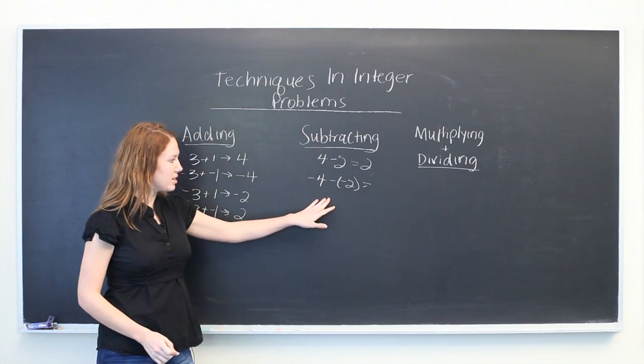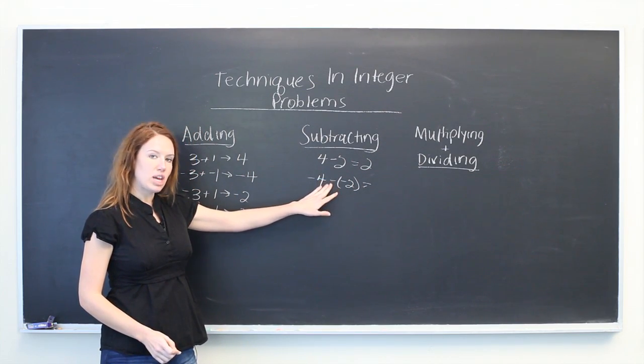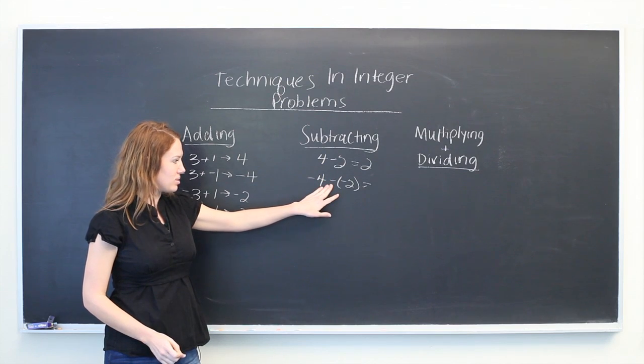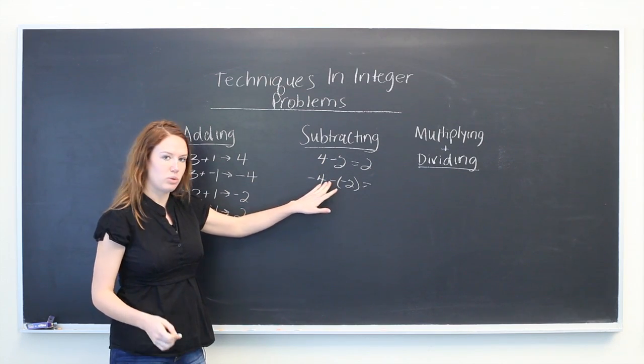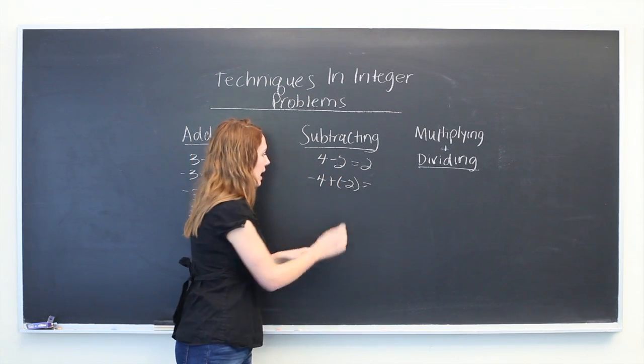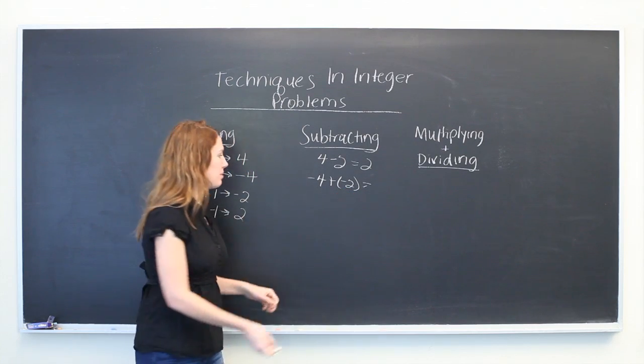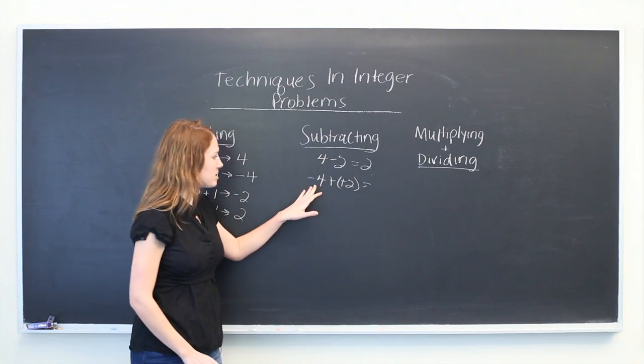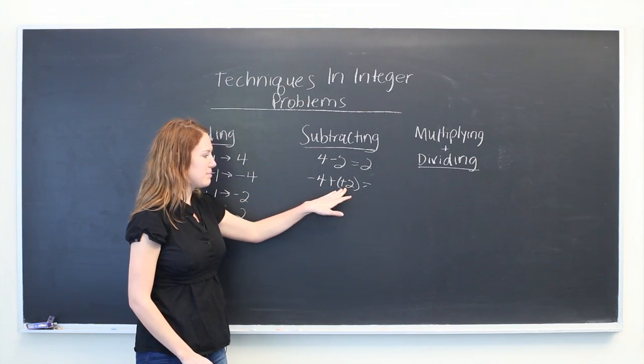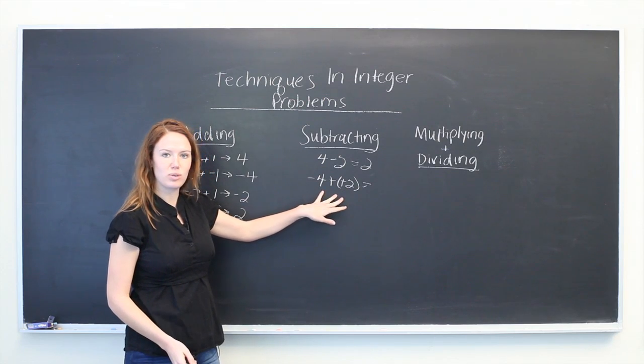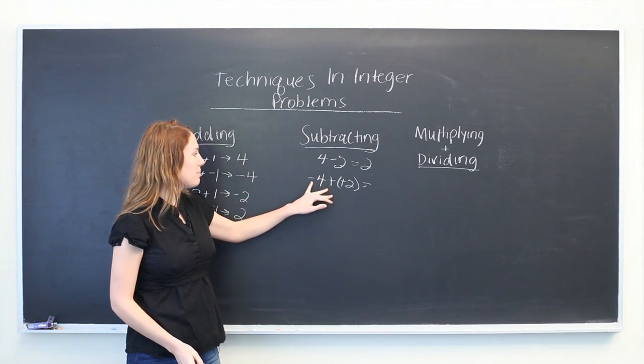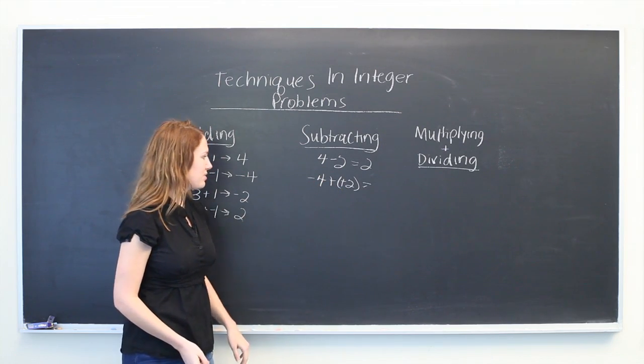With subtracting, you change the minus or subtraction sign to a plus and then you flip the sign of the second number. So minus 4 minus minus 2, subtracting two negative numbers will become minus 4 plus a positive number.